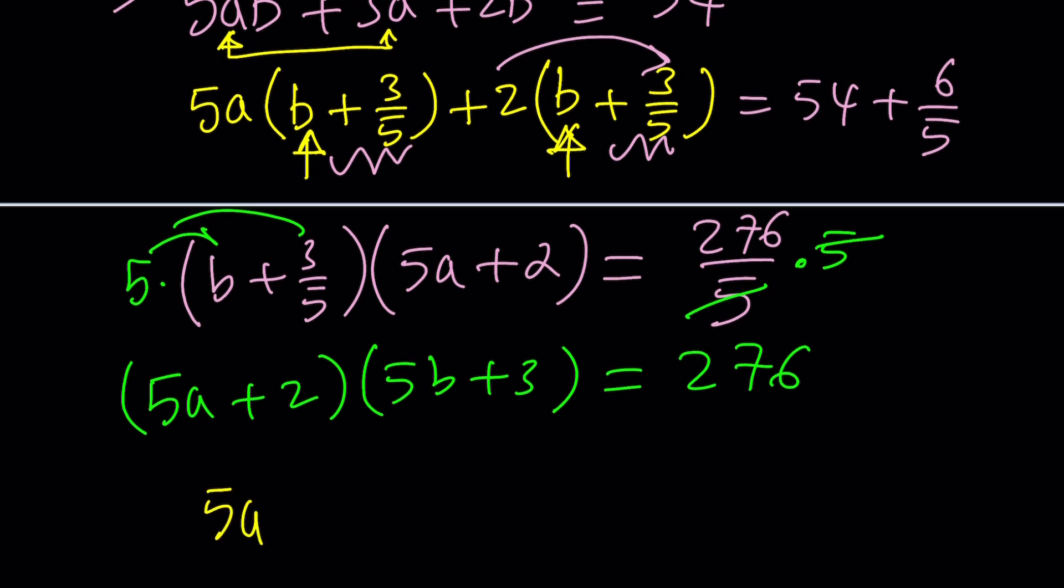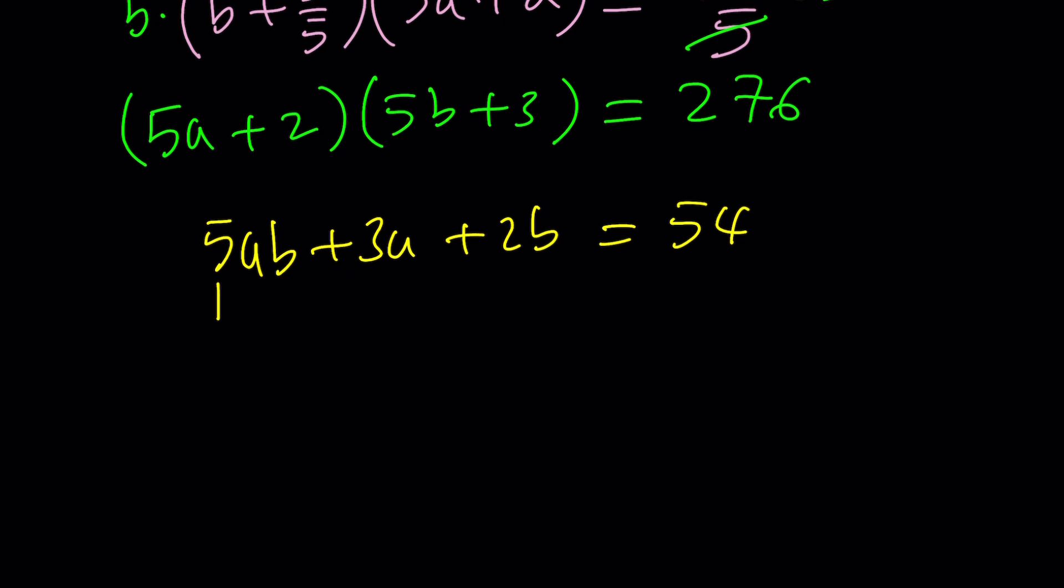You could also do the following, which is not always easy to see, but here's how it goes. Looking at this expression right here, we have a 5, but we don't have a 5. That's not good. So why don't we multiply both sides by 5? We can do that, right? Absolutely. Let's do it and you'll see what happens. When you multiply by 5, you're going to get 25ab + 15a + 10b equals 270. And then here,